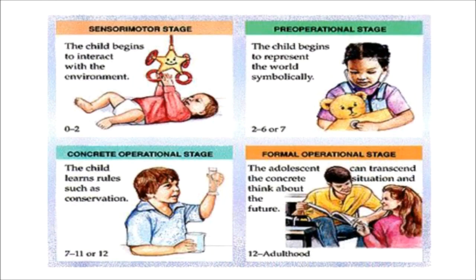Before we go to the next stage, let us deal with one theory — Piaget's cognitive development theory. Stage 1 is the sensorimotor stage, from 0 to 2 years. In this stage, the infant and toddler think with their eyes, ears, hands, and other sensorimotor equipment. Imitation, object permanency, and make-believe play are the main characteristics of this stage.